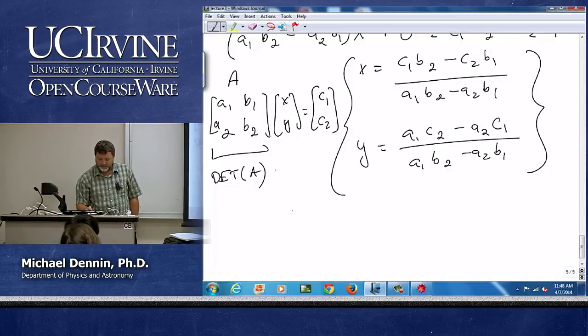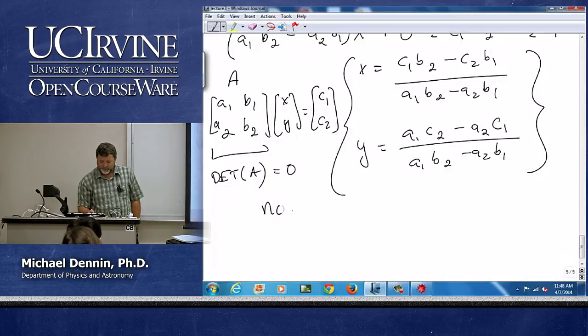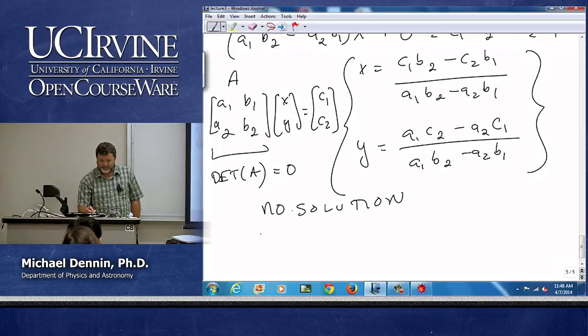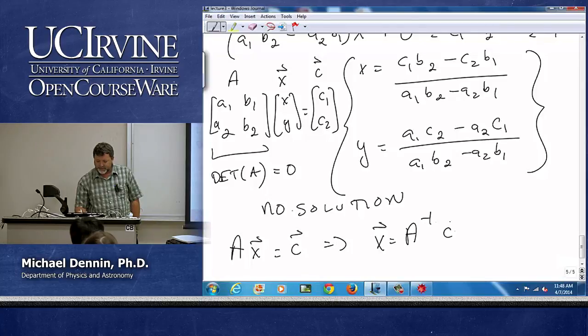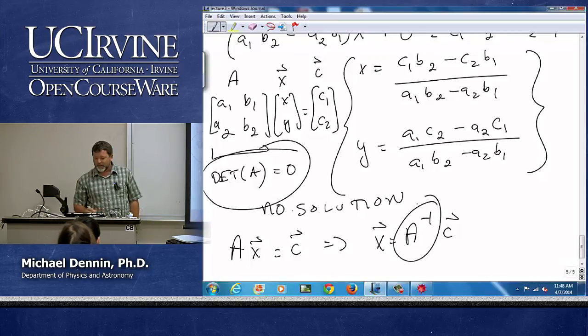Notice that if the determinant equals zero, there is no solution. And since if I think of this as the vector x and this is the vector c, since my equation is Ax equals c, my solution is A inverse times c. And we see a deep relation between the determinant of A and the inverse of A.